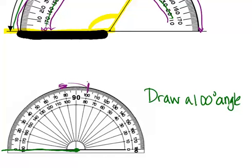And then we can just draw in our line, connect to our end point, and we have our 100 degree angle.